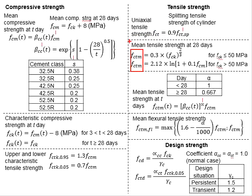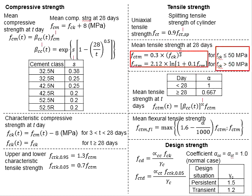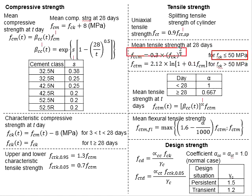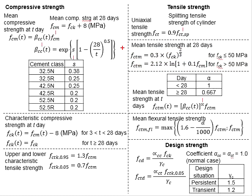FCTM represents the mean tensile strength of concrete at day 28. It can be determined by two equations depending on the concrete grade. For concrete grade less than 50 MPa, one equation is used; for concrete grade more than 50 MPa, another equation is used. It is basically a correlation between the characteristic compressive strength and the mean compressive strength of the concrete.